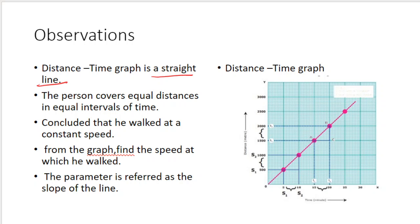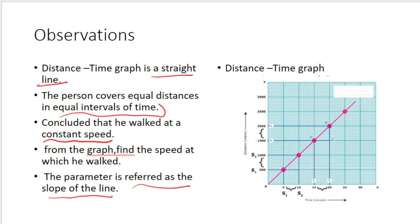The graph is a straight line. The person covers equal distances in equal intervals of time. From this graph you can find the speed. Equal distances covered in equal intervals of time means constant speed. We can measure the speed from the slope of the line. The slope of the distance-time graph equals rise over run, which equals distance divided by time — giving us speed.